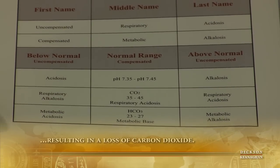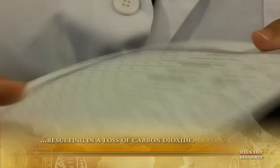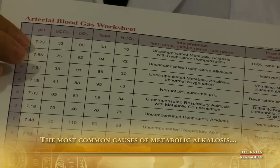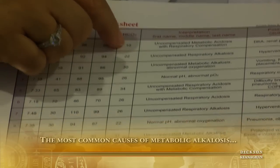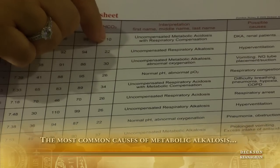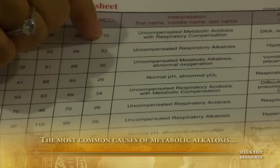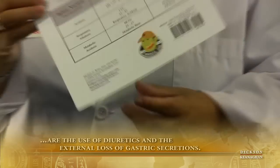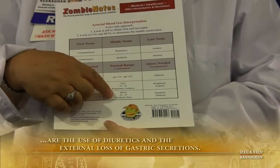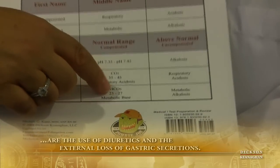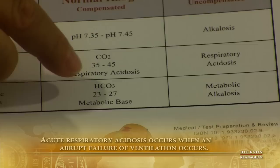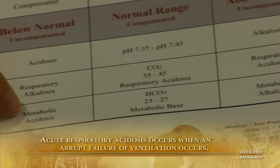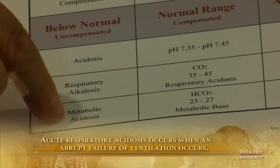Let's look at the bicarb now and see if that answers who's causing the uncompensated acidosis. The bicarb is 10. Normal is 22 to 27, so this is very low at 10. If I look at my metabolic base on the chart, normal is 23 to 27. The low number of 10 on the low side gives us a metabolic acidosis — exactly what we're looking for.